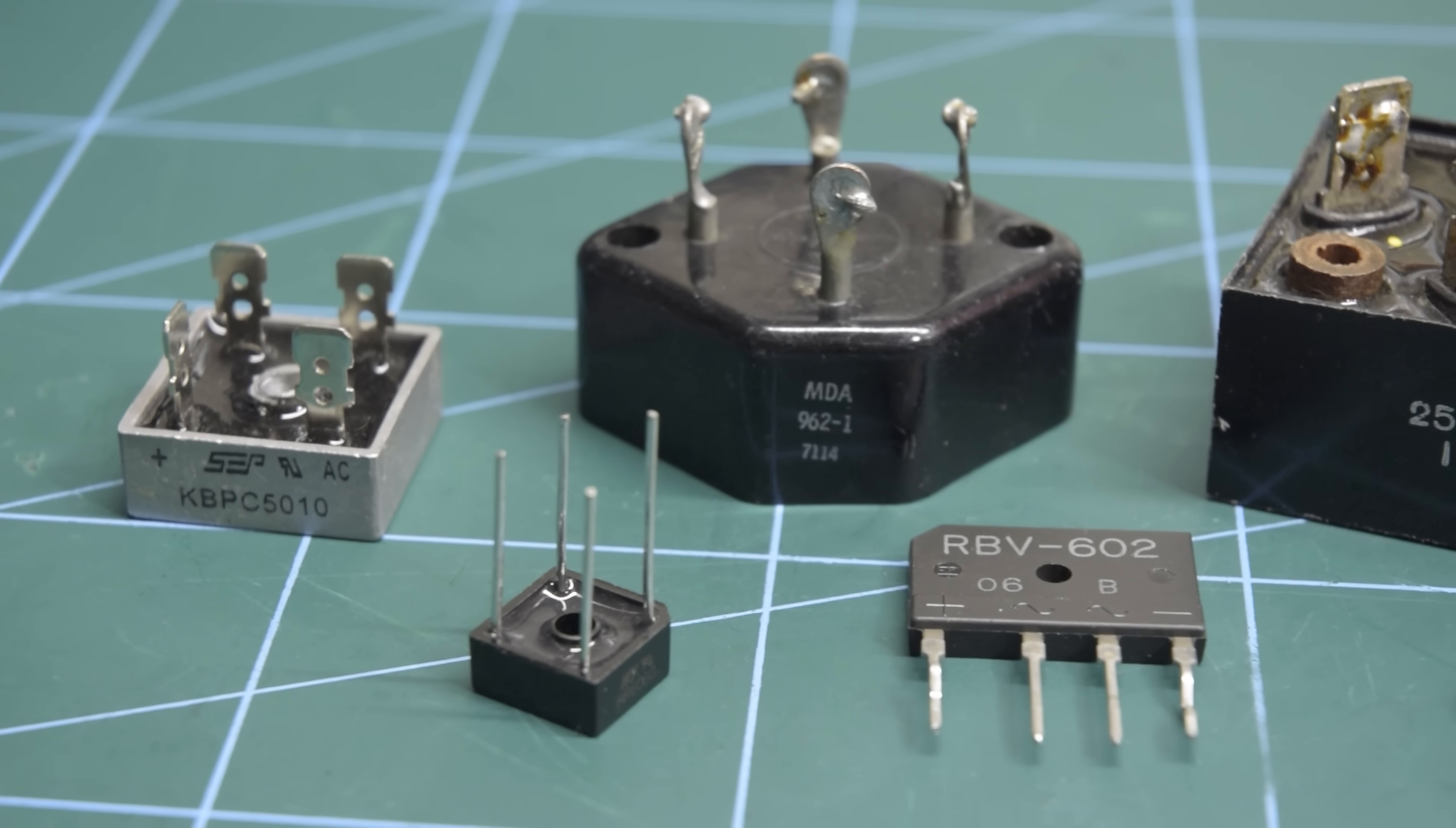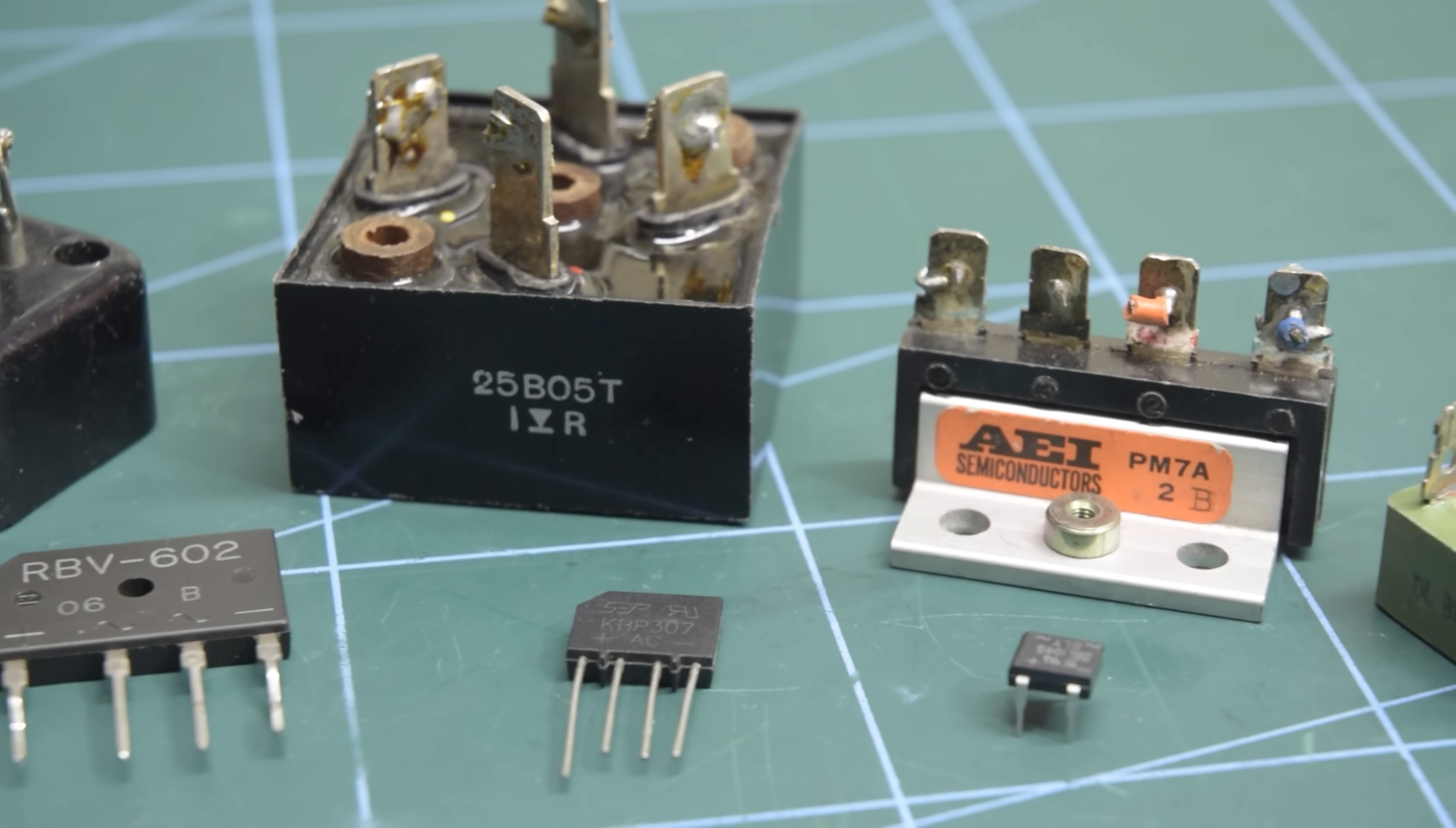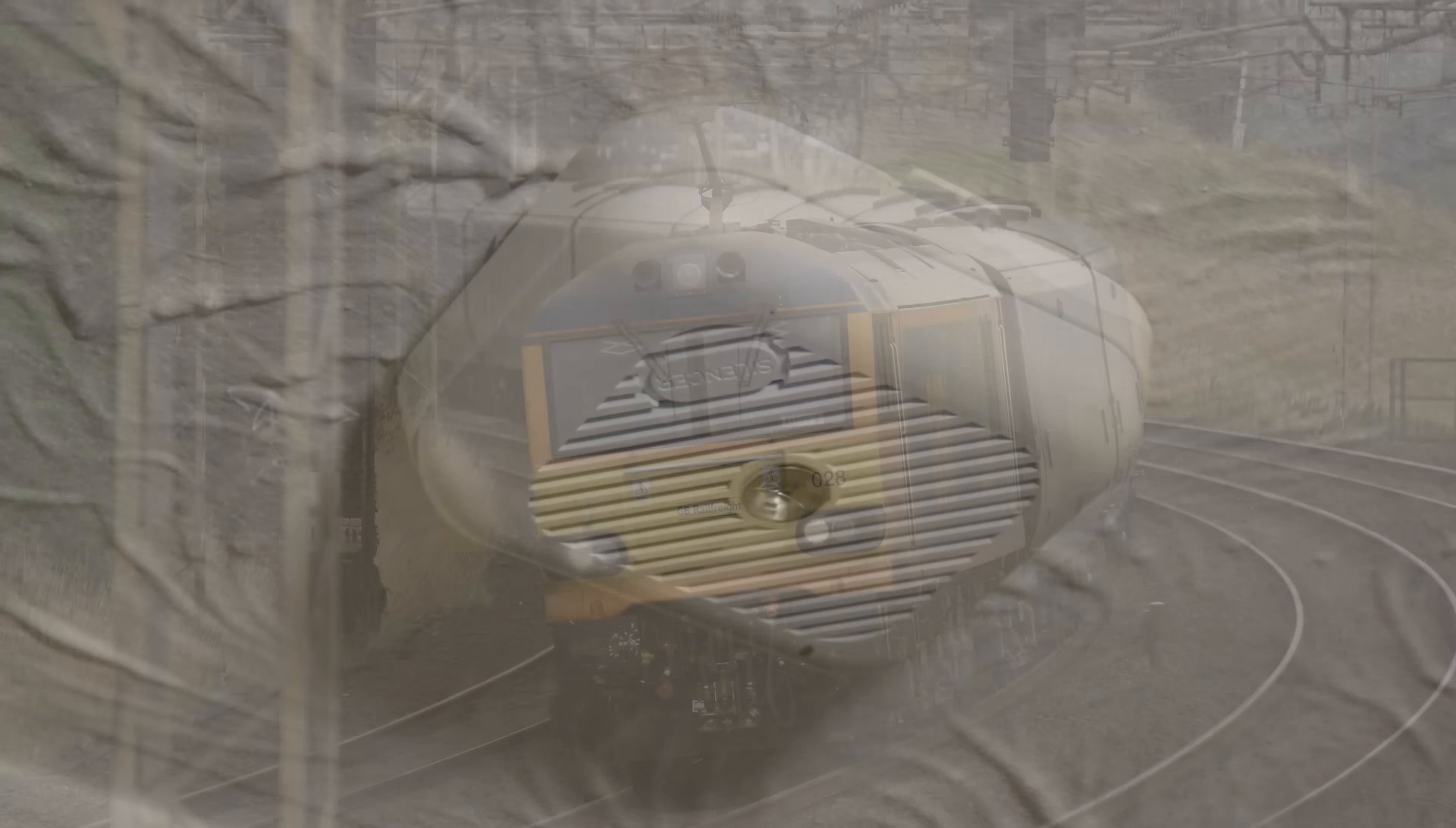Typically full bridge rectifiers come in a single package like these, which are typically designed to be cooled, as they can get pretty toasty with a lot of current flowing. Diode rectifiers are used basically everywhere we need to convert AC to DC. They seem great, a simple and low cost circuit that does exactly what we need, and indeed for many years that was the case, with full bridge rectifiers being used in everything from smoke alarms to locomotives.